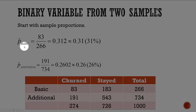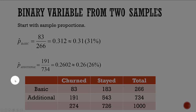In the basic group we had 266 total, and 83 of them left — that's 0.312 or about 31%. For those with additional services, we have 734 total, and of those, 191 have left. So that gives us about 0.2602 or 26% who have left in that one-month time period.